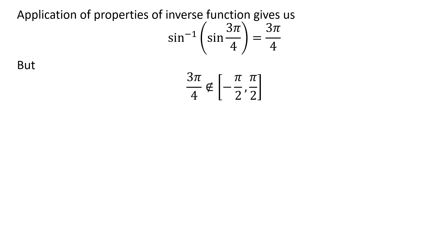But, 3 times pi upon 4 does not belong to the closed interval of minus half of pi and half of pi. As the range of inverse of sine function is the closed interval of minus half of pi and half of pi, so 3 times pi upon 4 is not the solution.